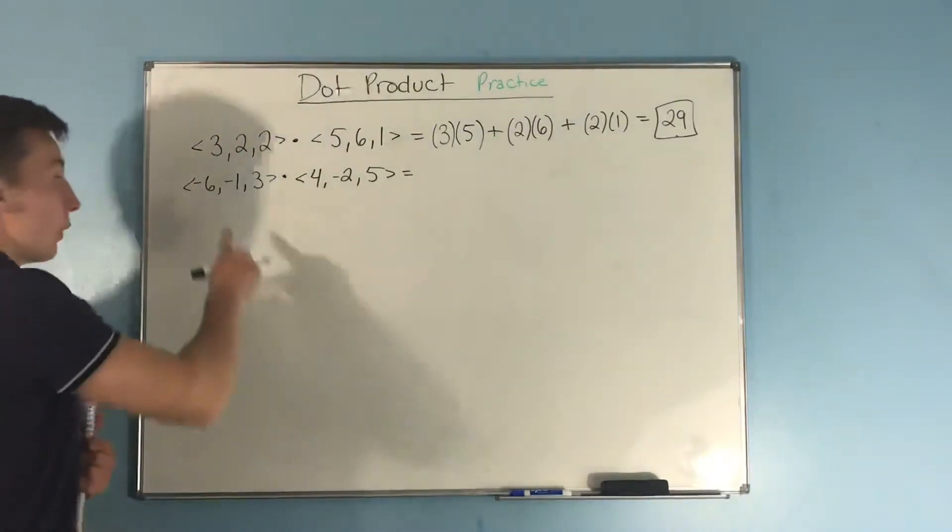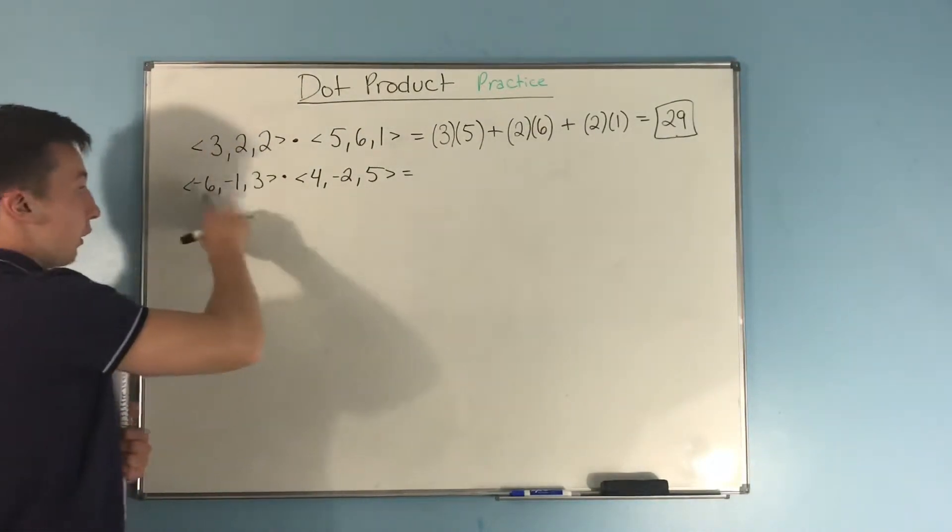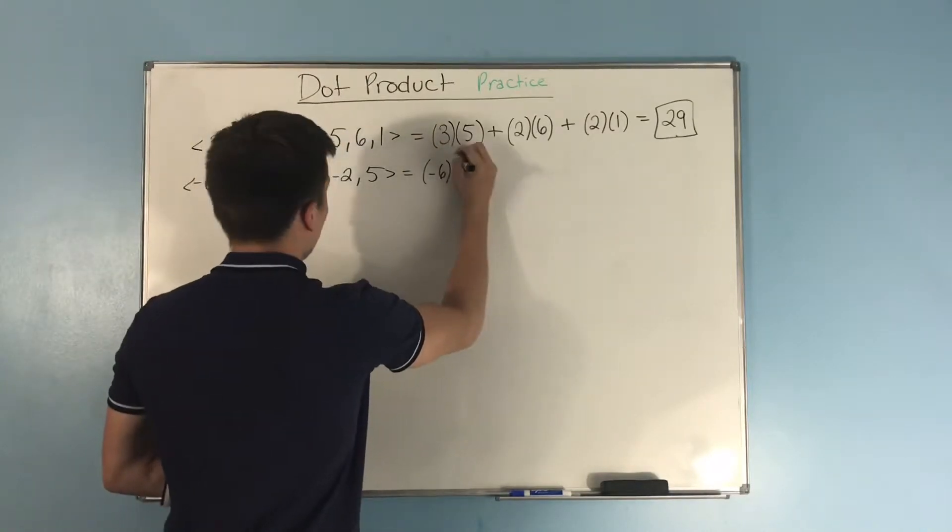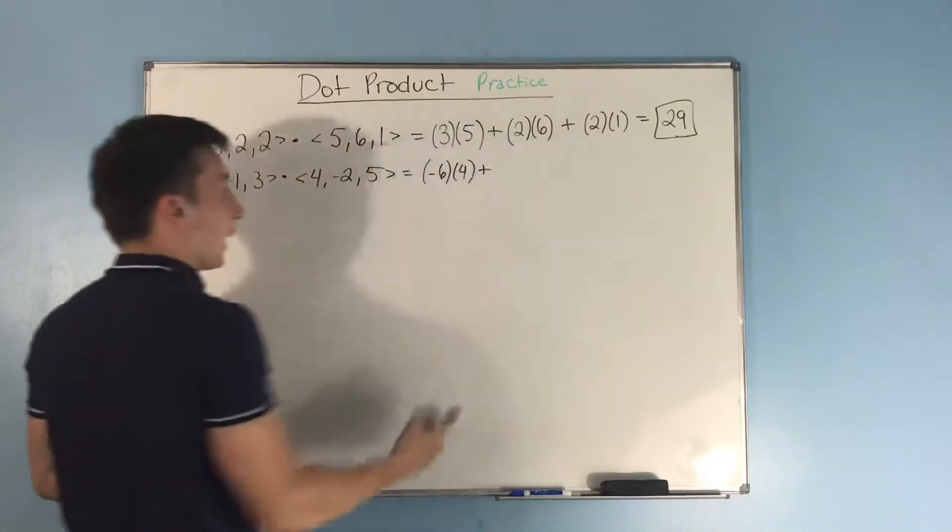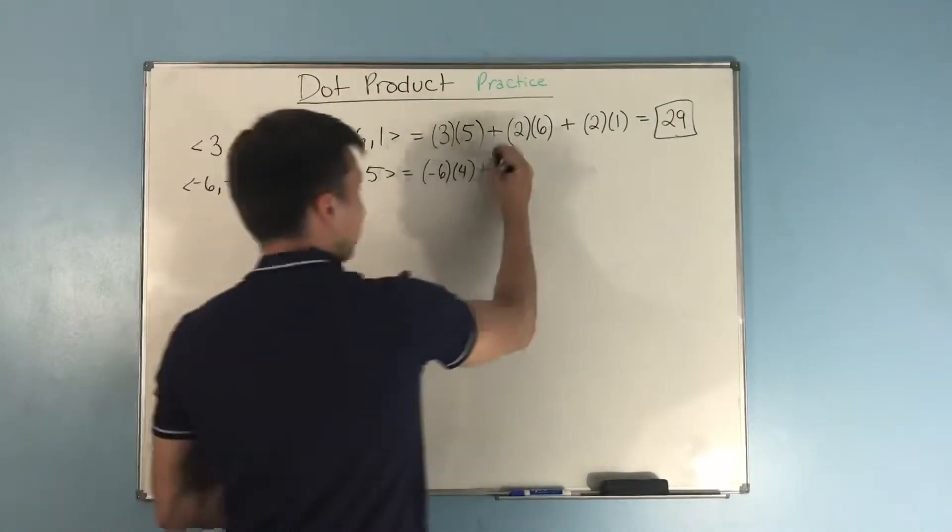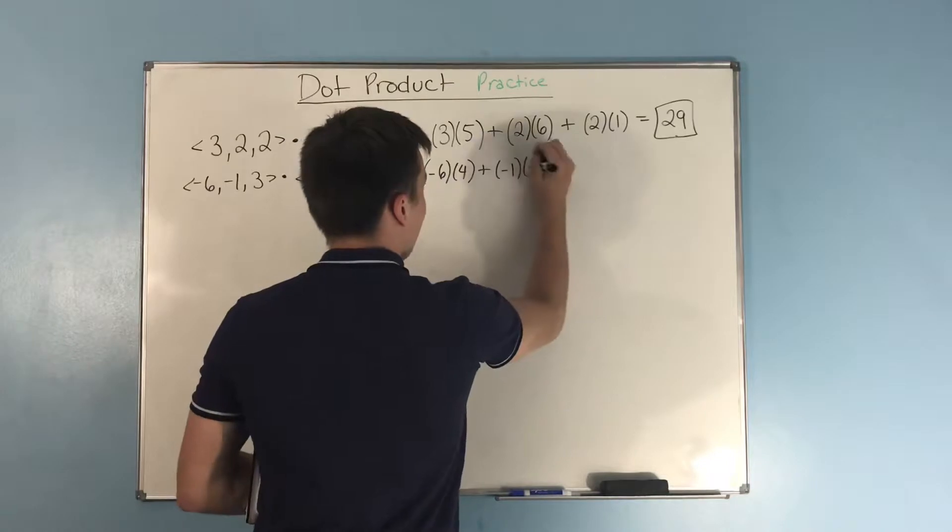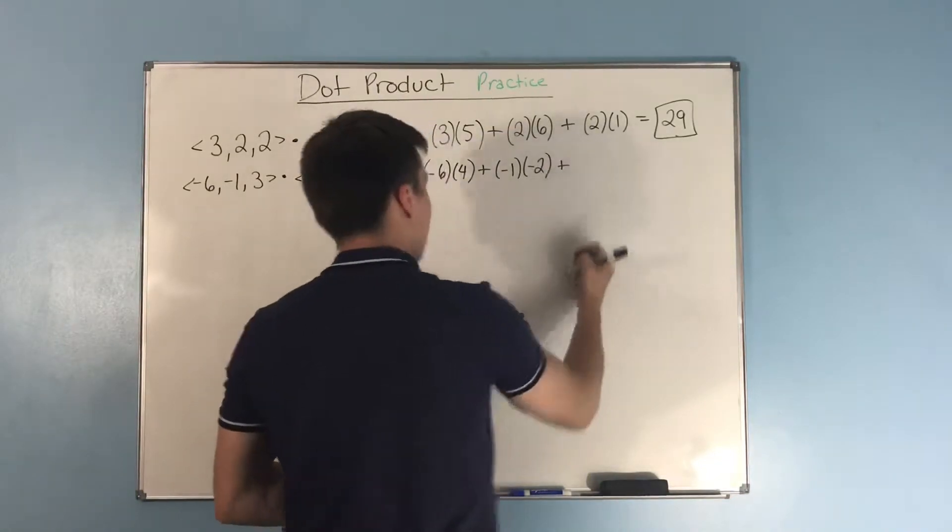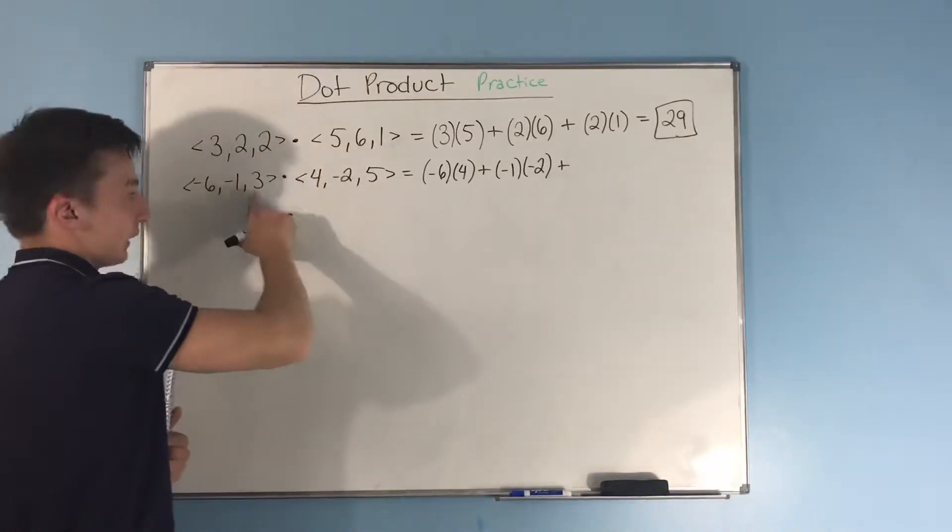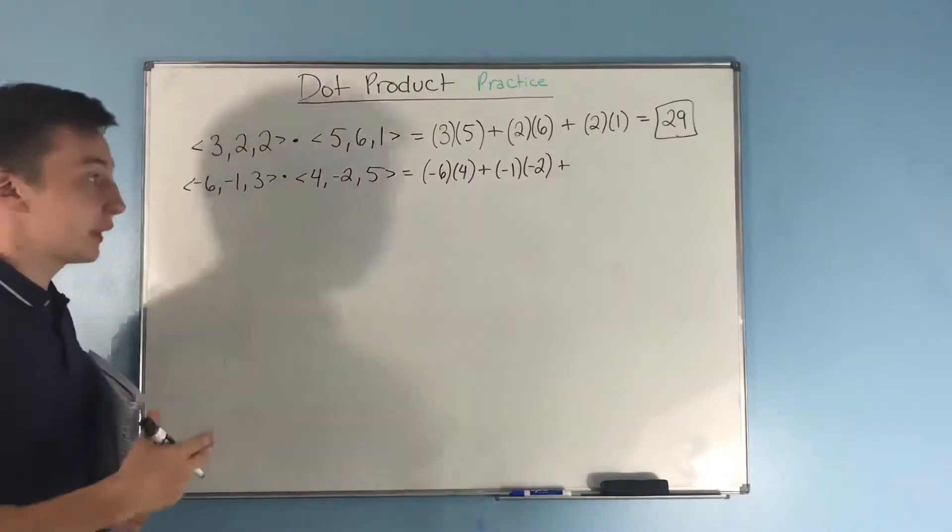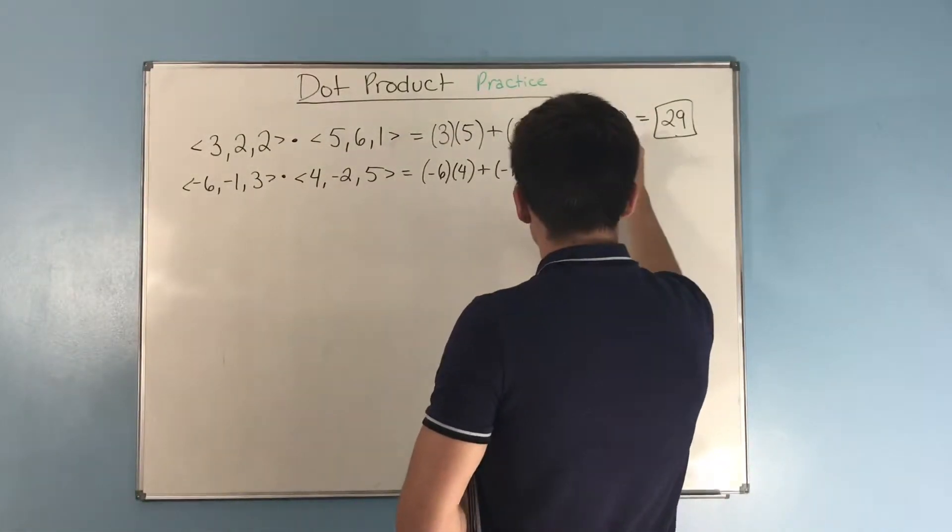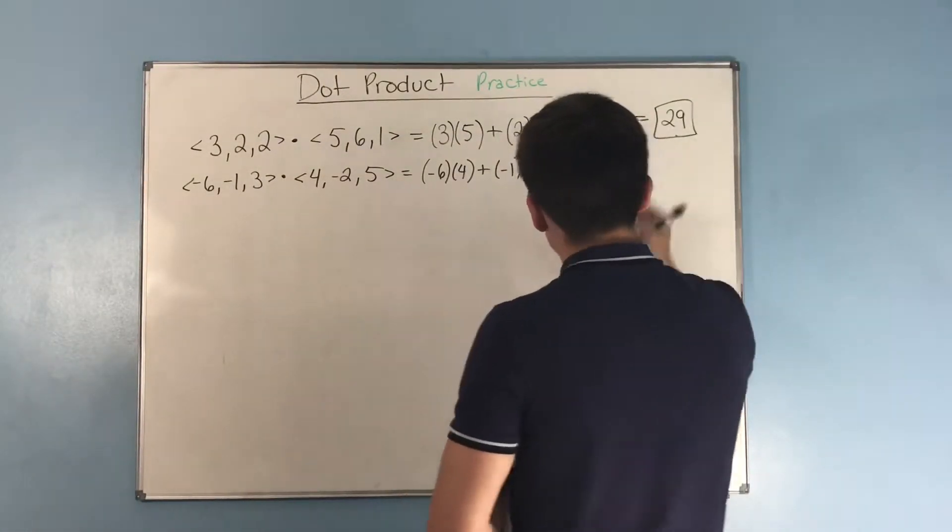Now, let's do this again. We take the first set of components, which is negative 6 and positive 4. And then, we add our next set of components. It's negative 1 and negative 2, multiplied together. And then, we add this to our last set, the 3 and the 5, the last set of components. We're going to multiply those together. So, 3 times 5.